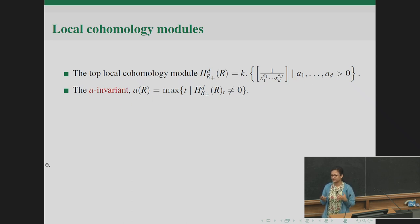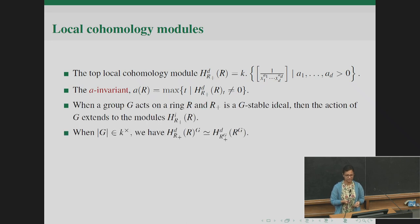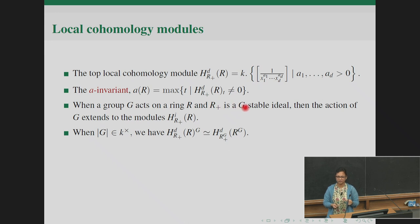One important invariant we'll look for is the a-invariant. Since the ring is graded, the top local cohomology module is a graded module, and we can talk about its graded components. In particular, the degree of the highest non-zero graded component is called the a-invariant. Since R_+ is a G-stable ideal in our polynomial ring setup, the group action extends to an action on the local cohomology modules.